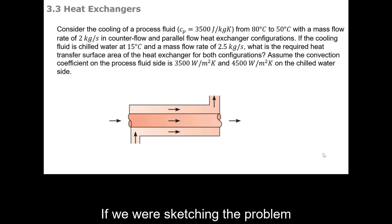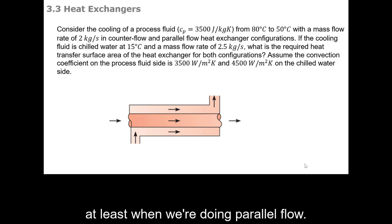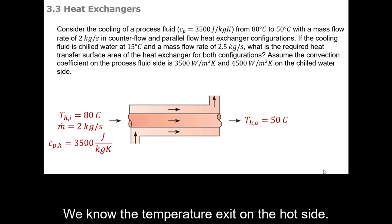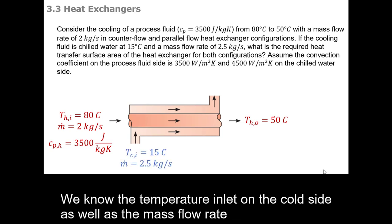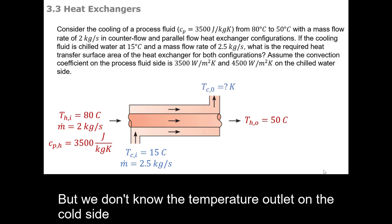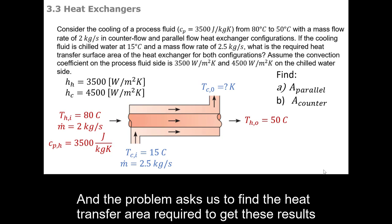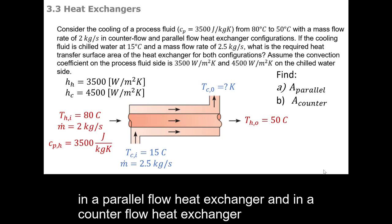If we were sketching the problem it would look something like this, at least when we're doing parallel flow. We would know the temperature at the inlet of the hot side, the mass flow rate, and the specific heat on the hot side. We know the temperature exit on the hot side. We know the temperature inlet on the cold side as well as the mass flow rate, but we don't know the temperature outlet on the cold side. We're told the heat transfer coefficients on the hot side and on the cold side, and the problem asks us to find the heat transfer area required in a parallel flow heat exchanger and in a counter flow heat exchanger.